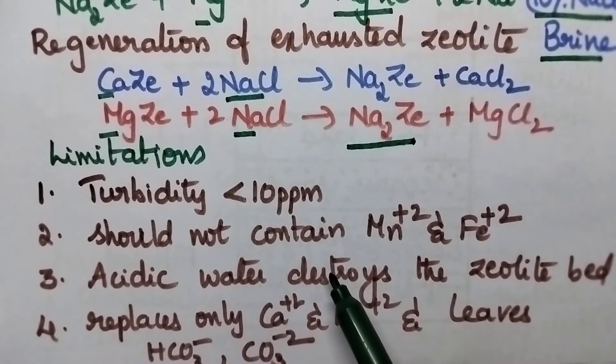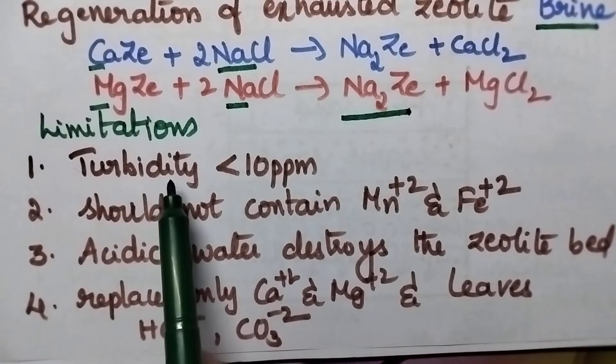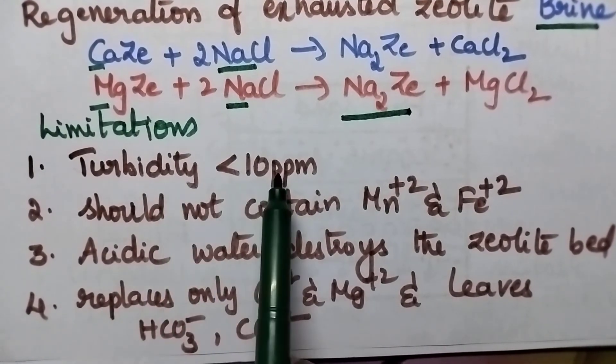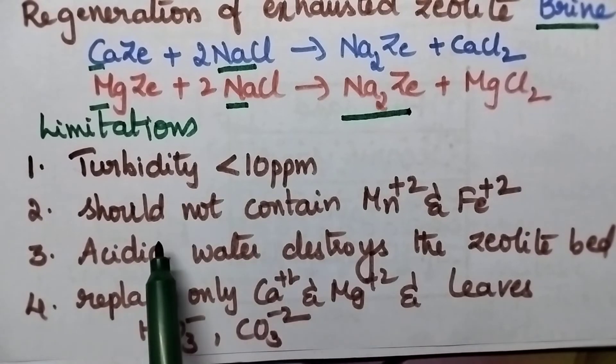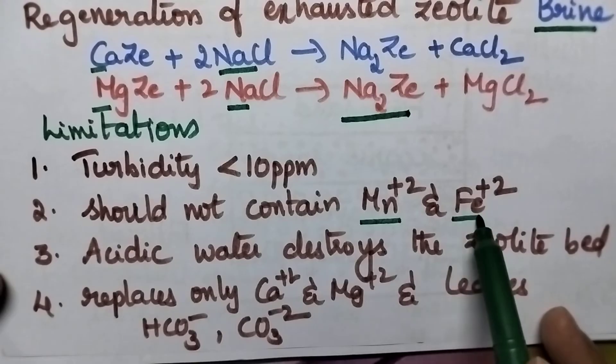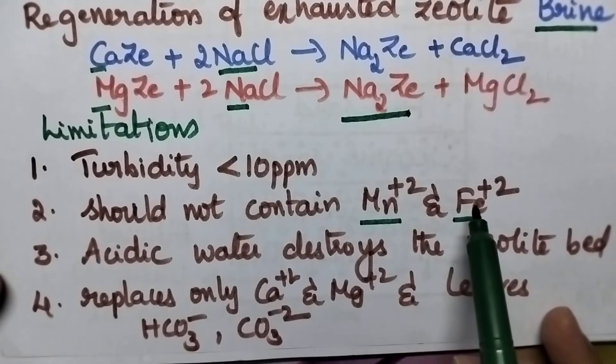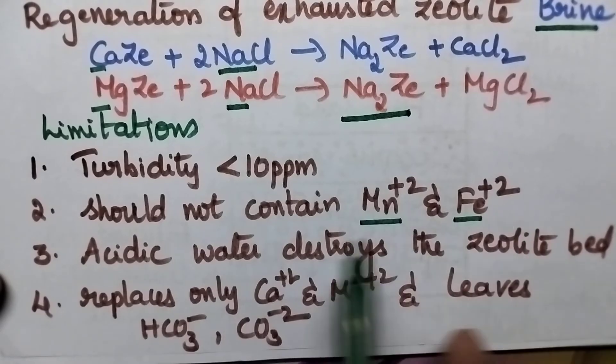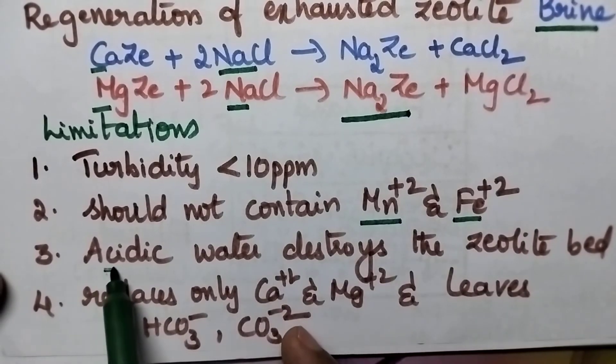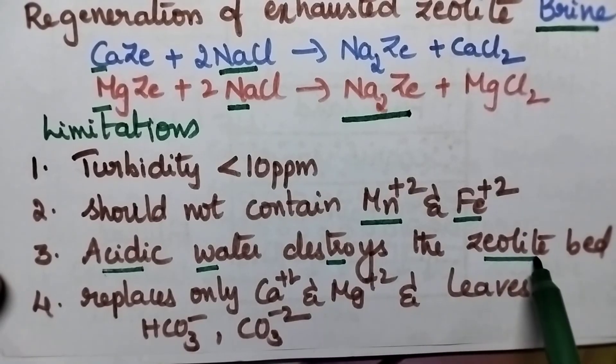Coming to the limitations of zeolite process, here the turbidity of the water should be less than 10 ppm. If the water contains the colored ions like manganese and iron it results in the formation of manganese zeolite and iron zeolite which cannot be regenerated. So whenever acidic water is passed through the zeolite bed it destroys the zeolite bed.